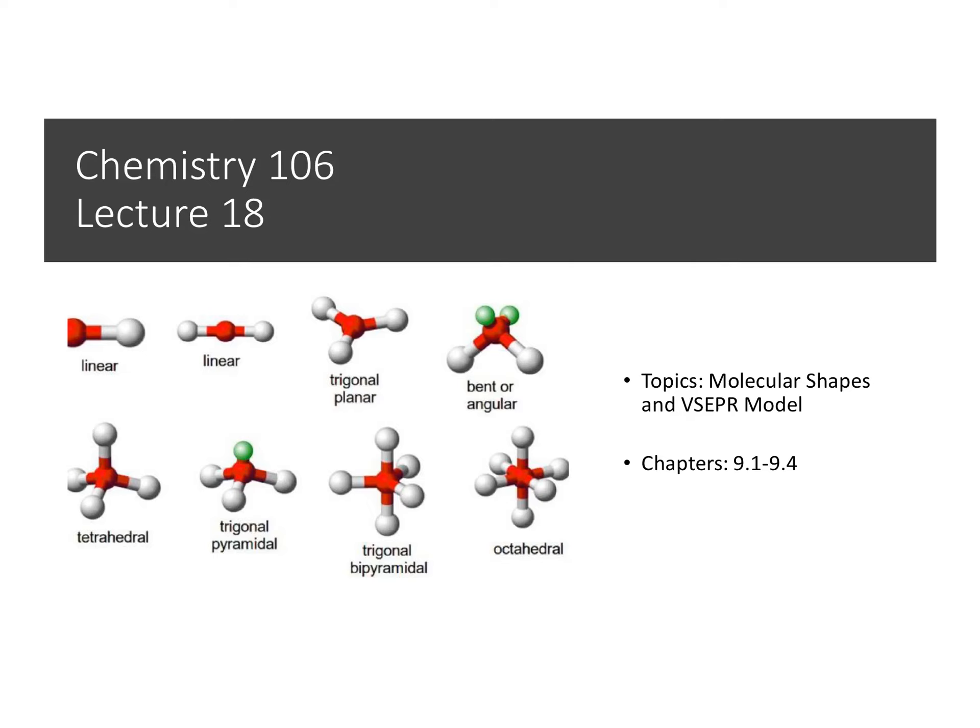For chapter 9, we're starting to look at what is the molecular shape of molecules, how do we determine that molecular shape, and we're going to get into VSEPR theory — valence shell electron pair repulsion theory — to help us better understand the shape of molecules.